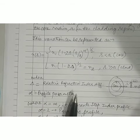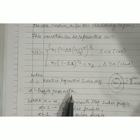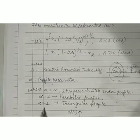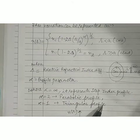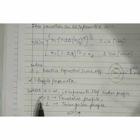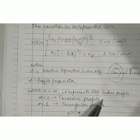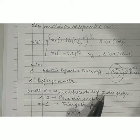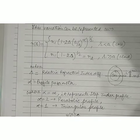Talking about the profile parameter alpha: it can have different values, and depending on the value of alpha we can have different kinds of profiles for the graded index fiber. When alpha equals 1, it gives a triangular profile. When alpha equals 2, it gives a parabolic profile. When alpha has a very high value — approaching infinity — it represents a step index fiber.